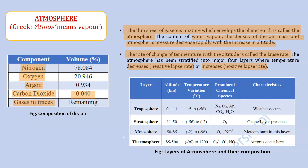Looking at the table, starting from the surface of Earth, the first layer is the troposphere. It extends from 0 to 11 kilometers. Temperature varies from 15 degrees Celsius at ground level, decreasing with height to minus 56 degrees Celsius — so it has a negative lapse rate. Prominent chemical species include nitrogen, oxygen, and argon. Weather conditions occur in this layer.